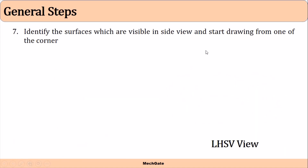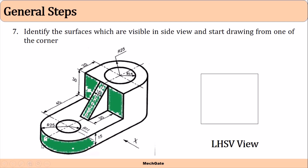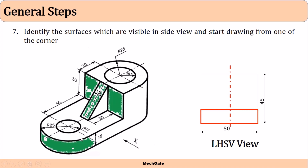Now identify the surfaces visible in the side view and start drawing from one corner. The web portion and two faces are visible in the side view. The maximum breadth is 50 mm and maximum height is 45 mm, so make a rectangle of 50 by 45. Before starting, locate the center line at the midpoint of the 50 mm. The cowed surface is represented as a rectangle of 15 by 50.